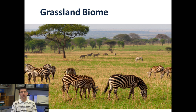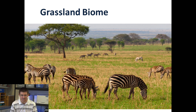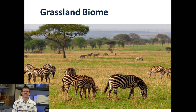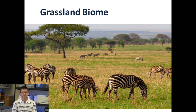The grasslands biome, which are the prairies and savannahs, with a lot of the larger animals that we think about — like zebras, giraffes, and elephants in the African grasslands, and bison, prairie dogs, and things like that in the North American grasslands.